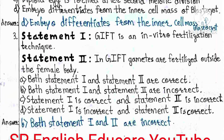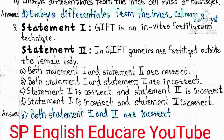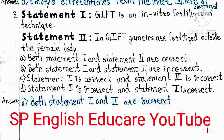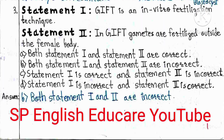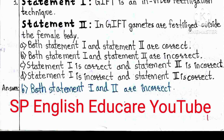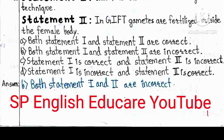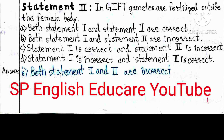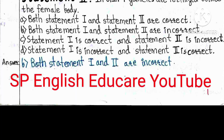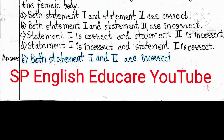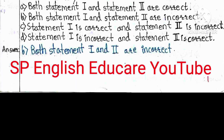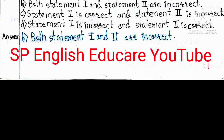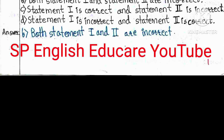Question 3: Statement 1 — GIFT is an in vitro fertilization technique. Statement 2 — In GIFT, gametes are fertilized outside the female body. A) Both statements 1 and 2 are correct, B) Both are incorrect, C) Statement 1 correct and 2 incorrect, D) Statement 1 incorrect and 2 correct. The answer is B — both statements 1 and 2 are incorrect.